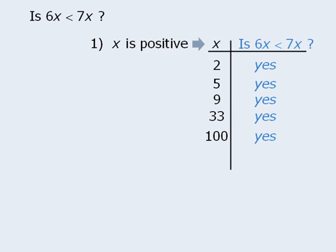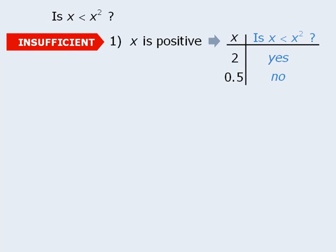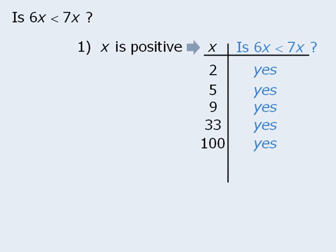Let's compare these results to the results in the last question. In that example, we showed that when x equals 2 the answer to the target question is yes, and when x equals 0.5 the answer is no. Since we have two conflicting answers to our target question, we can be certain that statement 1 is insufficient. In this example, the best we can do is say that statement 1 seems sufficient, but we can't really be certain unless we try every positive value for x, which we can't do.